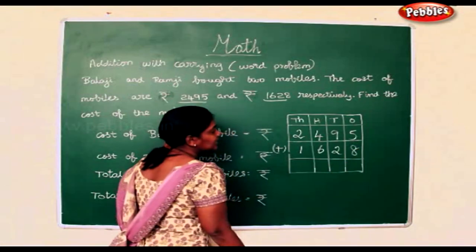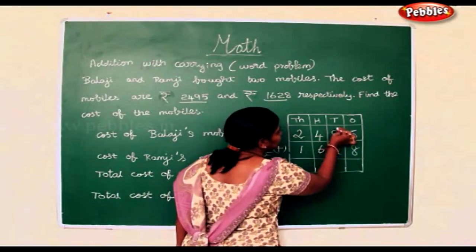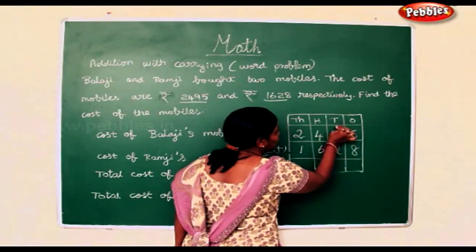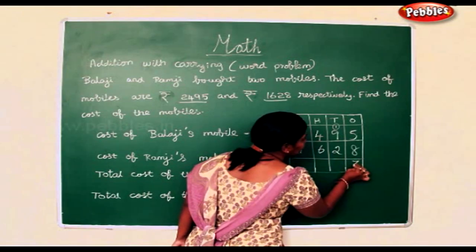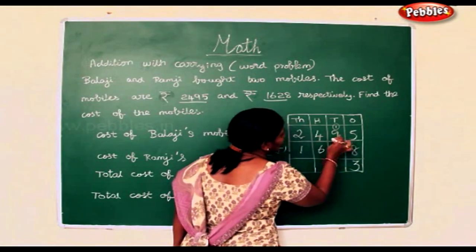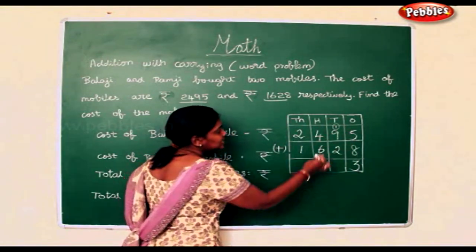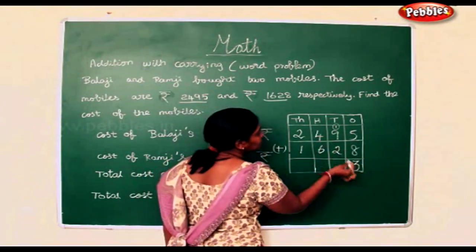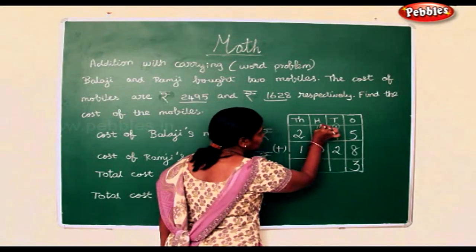8 add 5 is 13. I am putting the 1 here. 3 goes down. 9 add 1 is 10. 10 add 2 is 12. 1 in the 100th place.